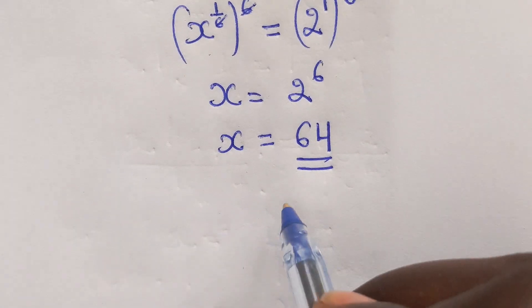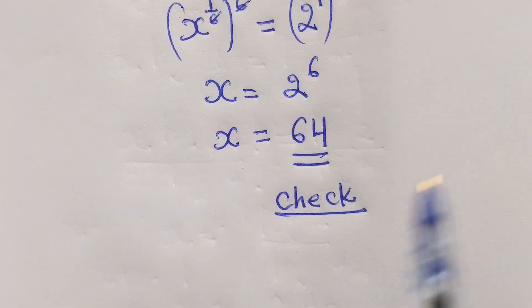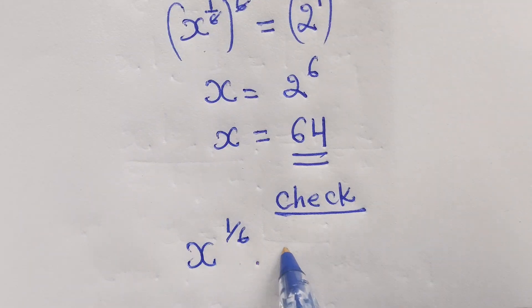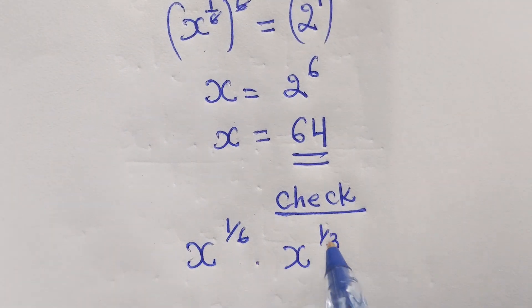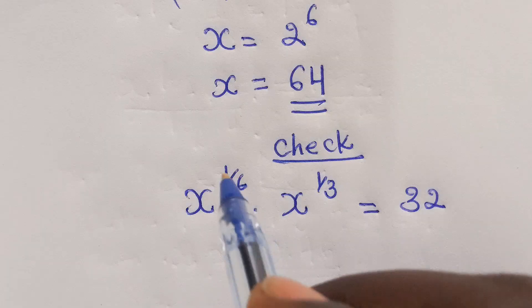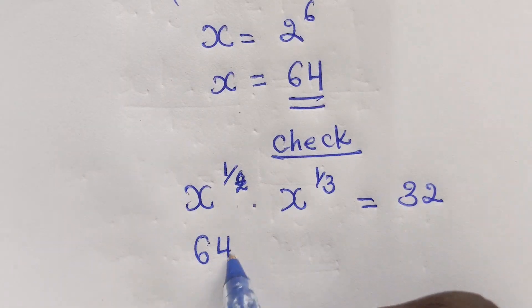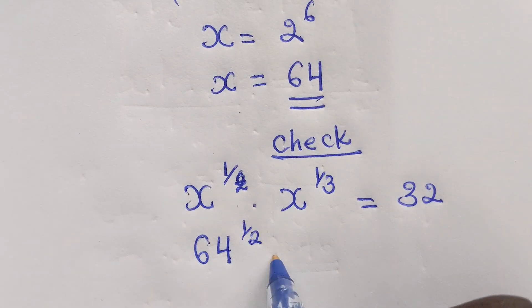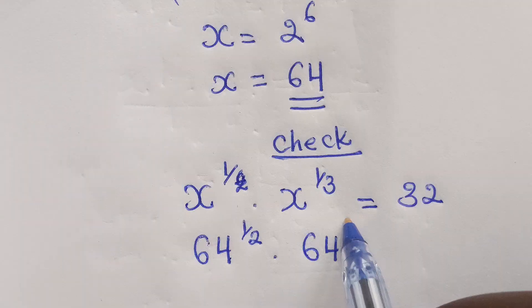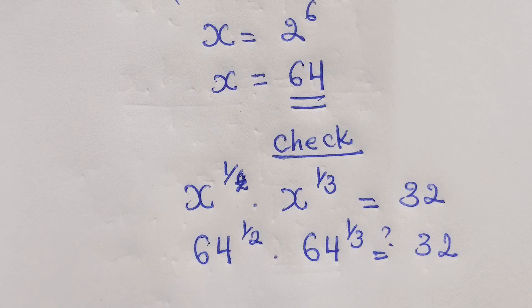And always have to check if our answer is correct. Then here, we have given x power 1 over 2 times x power 1 over 3 equal to 32. And here, of course, this is 64 power 1 over 2 times this one, 64 power 1 over 3 equal to 32. Question mark.